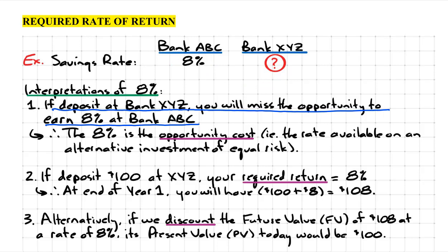So the first interpretation of the 8% is that it's an opportunity cost. The definition of opportunity cost is that it's the rate available on an alternative investment of equal risk, and this is an important distinction—equal risk.